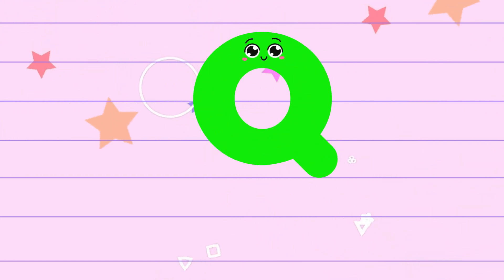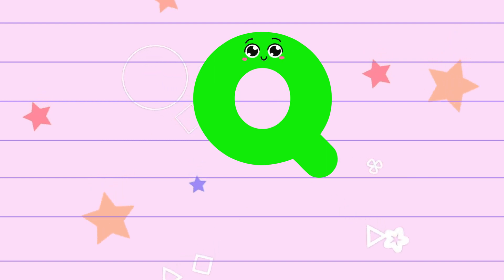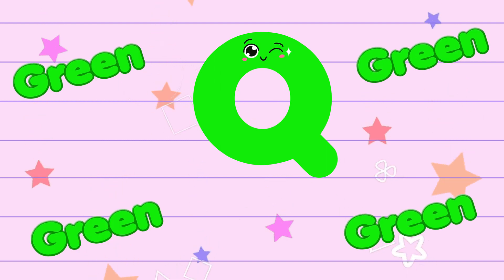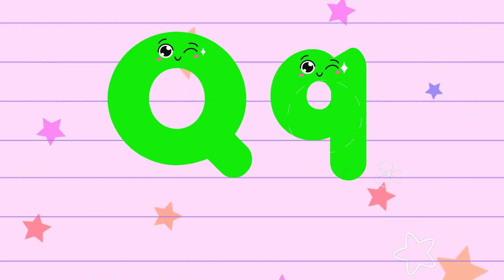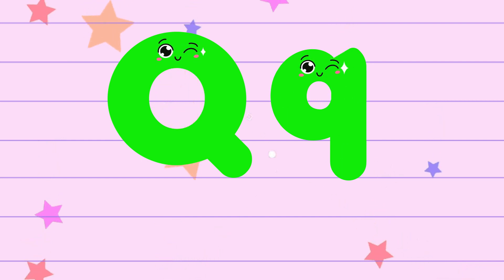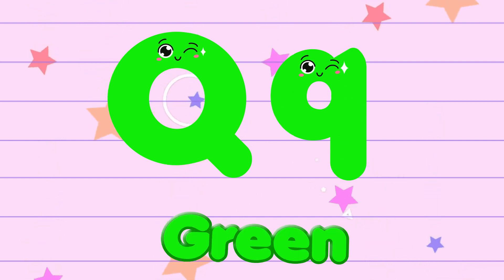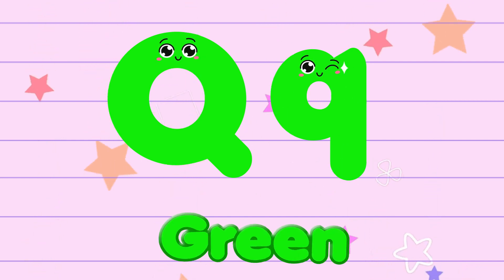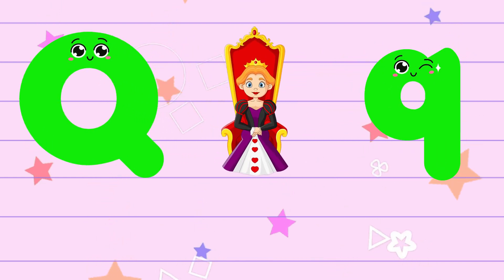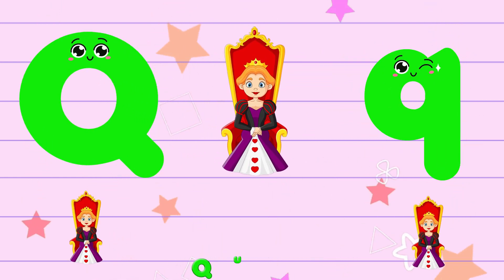Q. The color of the letter Q is green. The sound of the letter Q is kh. Q is for queen.